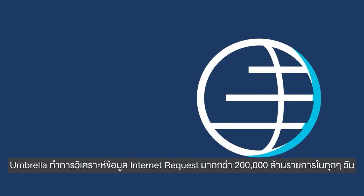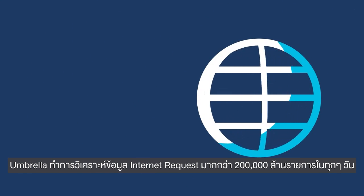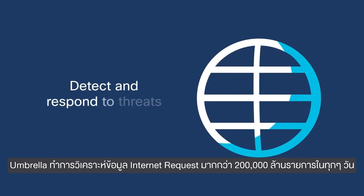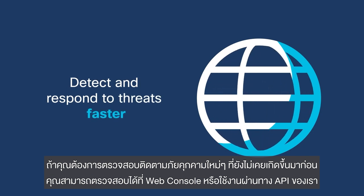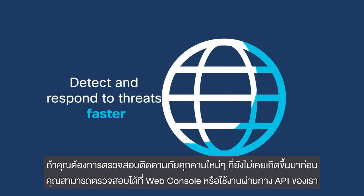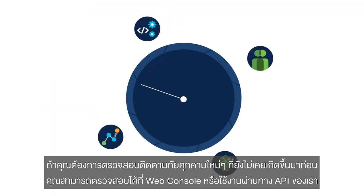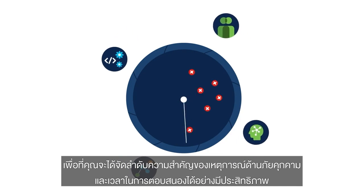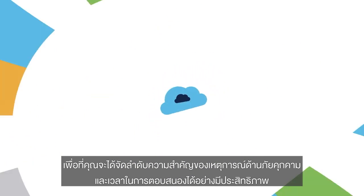Umbrella analyzes over 200 billion internet requests every day for unprecedented threat insights, which you can harness through a web console or API, so you can prioritize incidents and accelerate your response times.